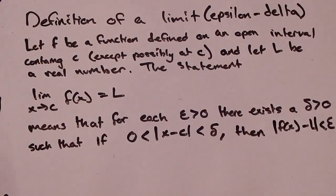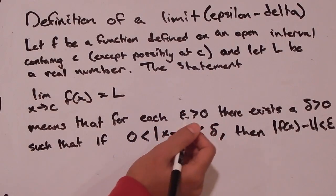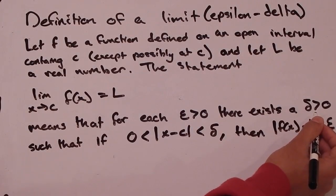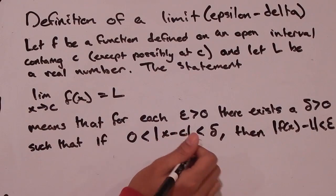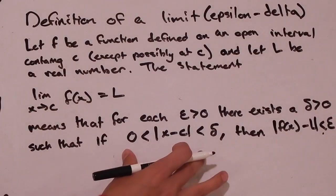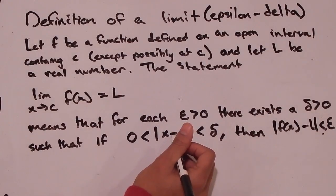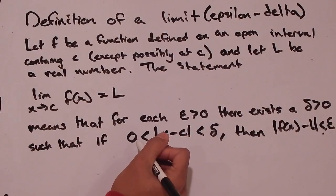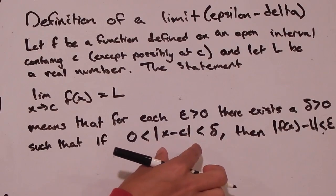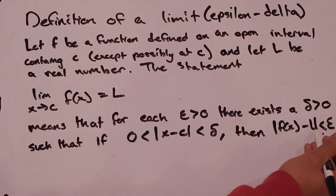Epsilon and delta are not random numbers — they're arbitrary numbers greater than 0. For this definition to hold, for any epsilon value greater than 0, there has to exist a delta value greater than 0, such that when we choose x values that make the first inequality true, the second inequality is also true. We're picking x values a certain distance away from c — less than delta — and when we do, our f of x values must be within a distance less than epsilon from L.